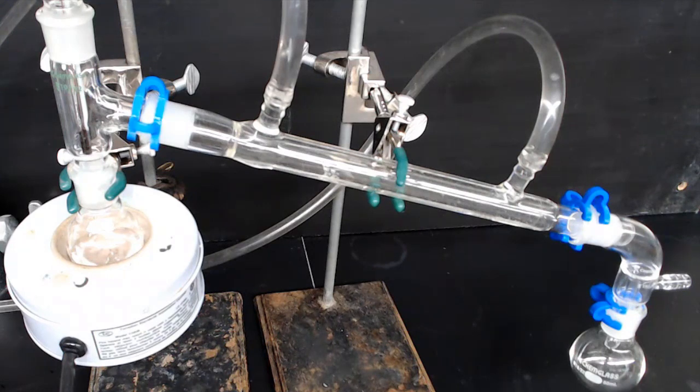As the flask heats up, you'll notice the liquid boil. Once it begins boiling, the vapor in the apparatus will climb up until it eventually touches the thermometer bulb. Then you'll notice a temperature rise on the thermometer.